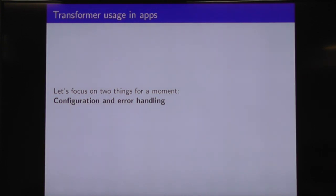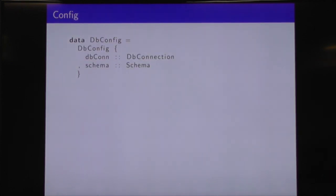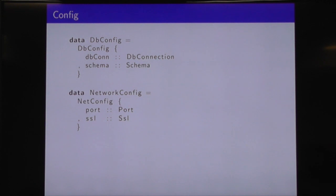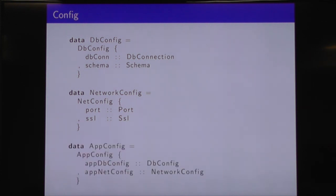So let's talk about transformers. At the moment we're just going to focus on configuration passing and error handling. We'll build up some example types. We've got our DbConfig type which has a database connection inside of it and some information about the schema. We've got a NetworkConfig which tells us what port we're running on and has some SSL stuff. And we've got our higher-level AppConfig which has both a DbConfig and a NetworkConfig in it.